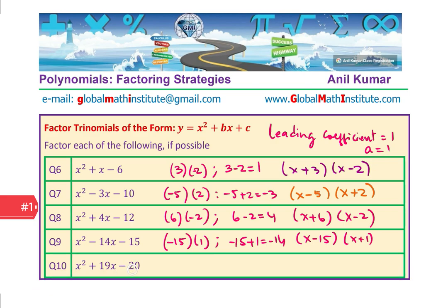The last one, minus 20 and 19 means 20 times 1. This time 20 will be positive, 1 will be negative, and you can complete this exercise. Since we know 20 minus 1 is 19, we'll write this as x plus 20 times x minus 1. Do you see how simple it is? That is how we are going to factor these trinomials.